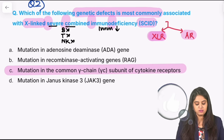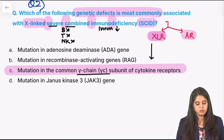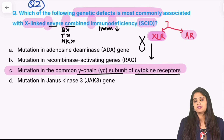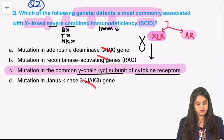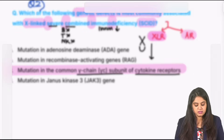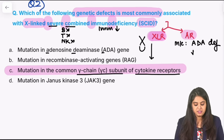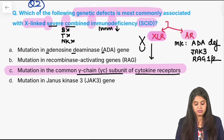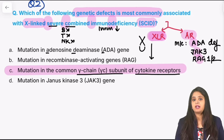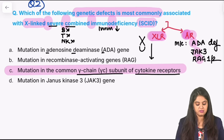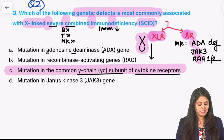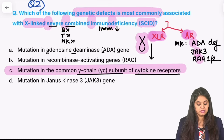SCID can be of two types. When they say X-linked recessive, there is a problem in the gamma subunit of cytokine receptors — the way you write X is the way you write gamma. X-linked recessive equals gamma subunit of cytokine receptors. All other options given are autosomal recessive types of SCID: the most common autosomal recessive defect is adenosine deaminase (ADA) deficiency. Apart from that we can have JAK3 gene defect, or RAG1 and RAG2 gene defects. ADA deficiency, JAK3, or RAG1/2 are all autosomal recessive; gamma subunit problem is XLR.